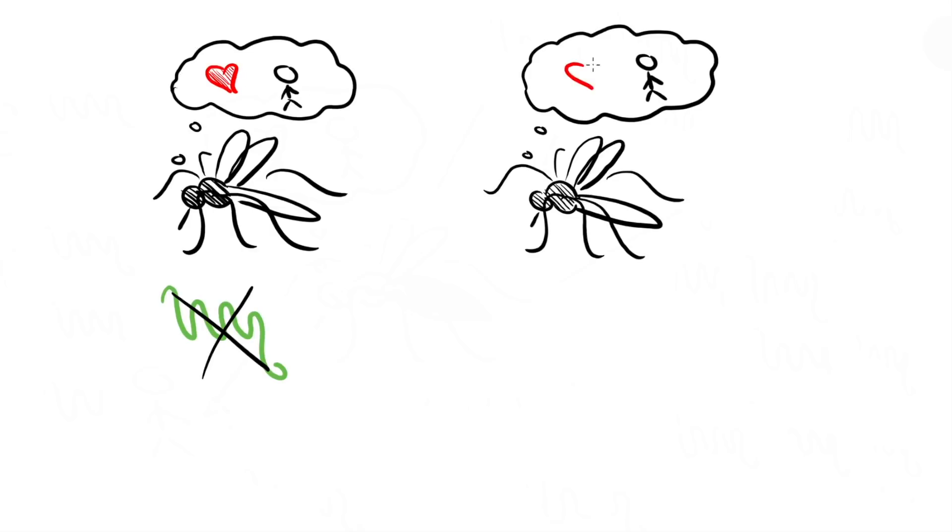But to fool hungry mosquitoes into losing interest in humans, the researchers wanted to find a way to activate NPYLR7. The problem is that you need to have an insect-specific drug that would activate this receptor without affecting the human NPY receptors.